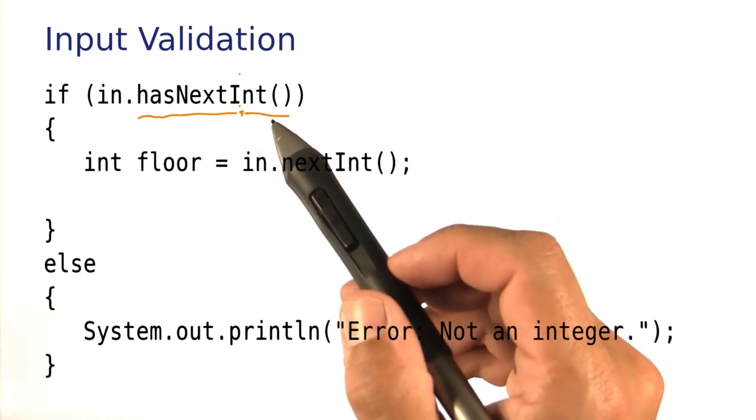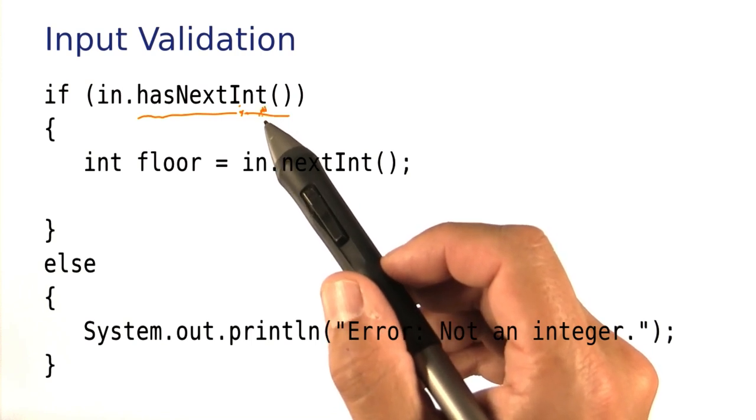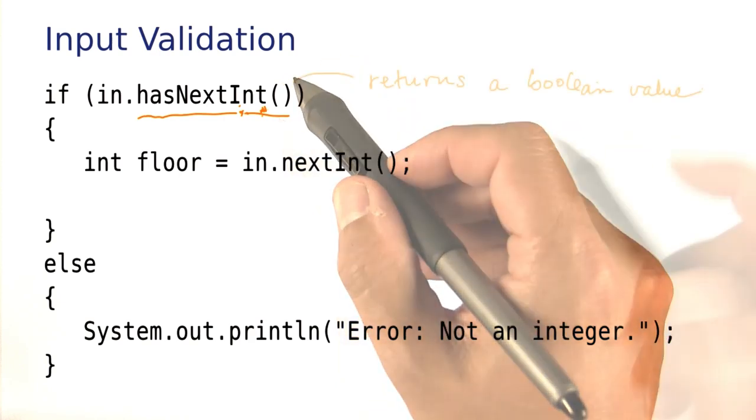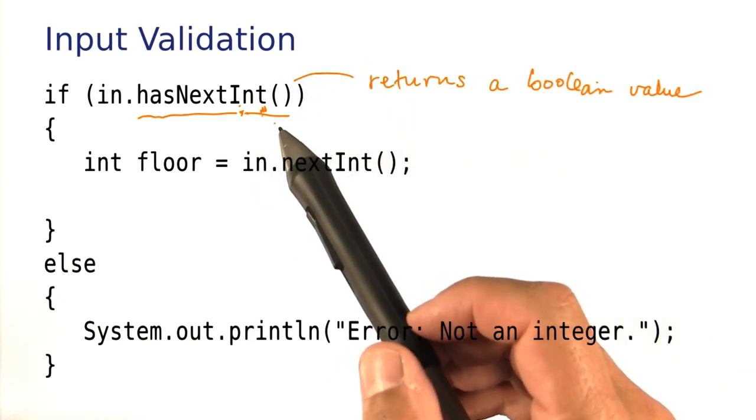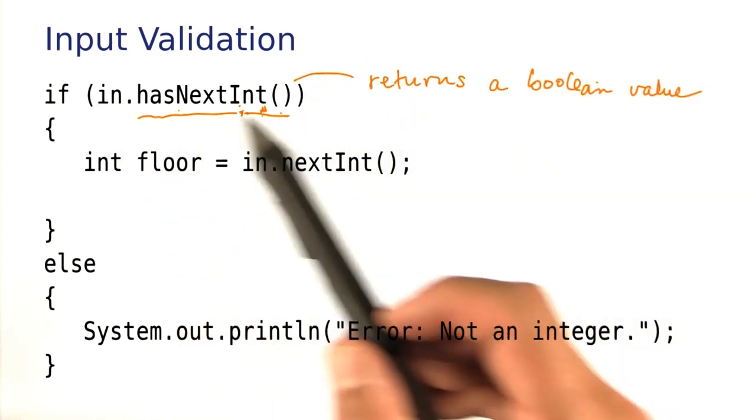It returns true if the user entered an integer. It returns false if the user entered something else. In other words, it's a method that returns a Boolean value, so we can test for that in the if statement.